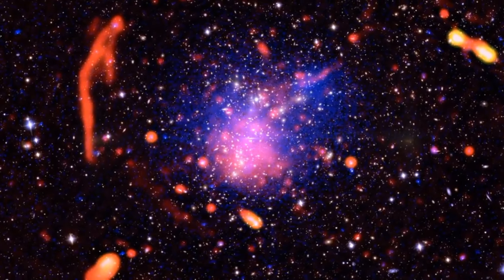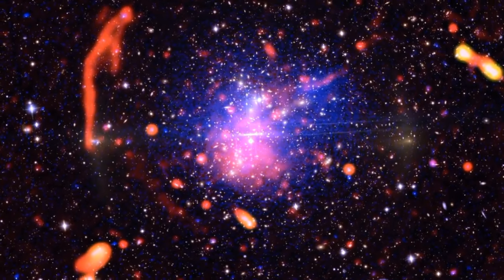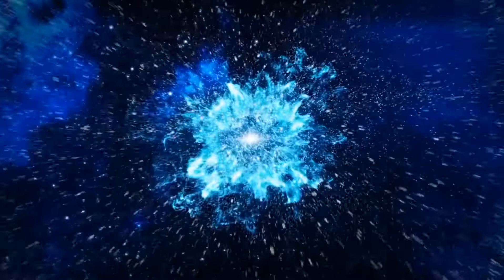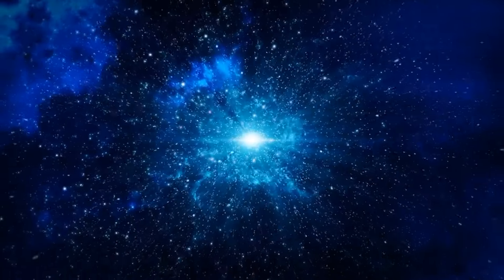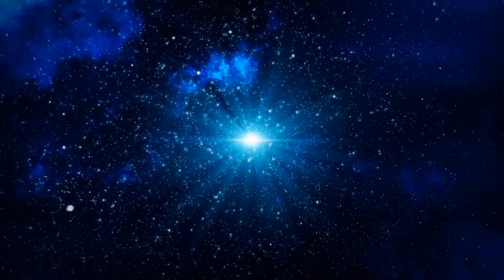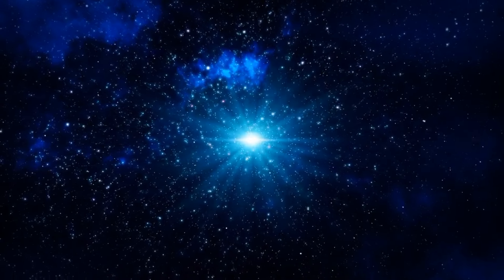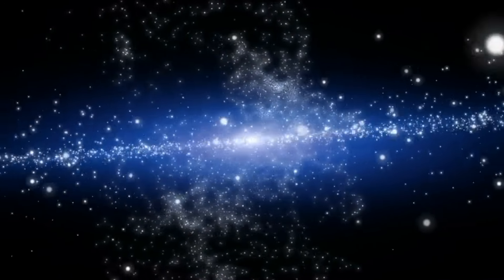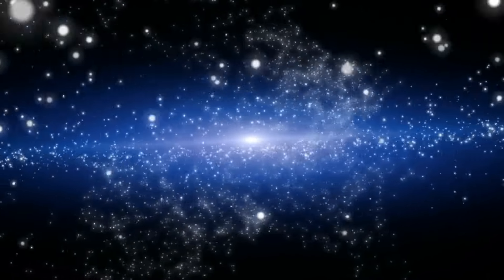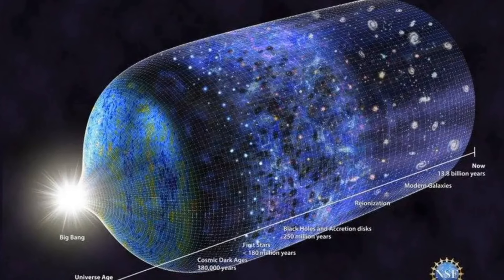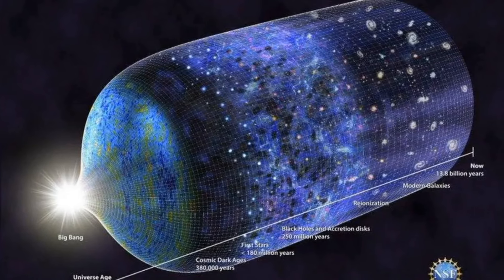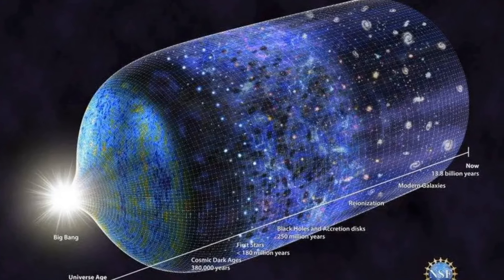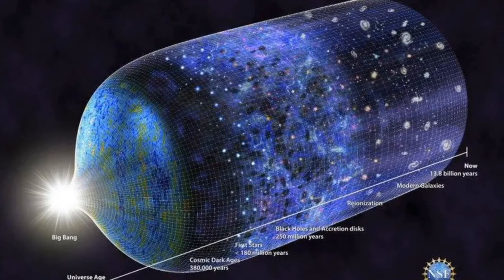However, this narrative faces scrutiny when considering the potential infinity of the universe itself. If the universe is indeed infinite, as recent indications suggest, the Big Bang was not a singular event at a specific point but an omnipresent occurrence across the cosmic expanse. Galaxies did not form in specific regions but materialized ubiquitously, even beyond the bounds of the observable universe. This challenges our perception of the singularity as the Genesis point, proposing instead that it represents an infinite space where all existence materialized simultaneously around 13.8 billion years ago.